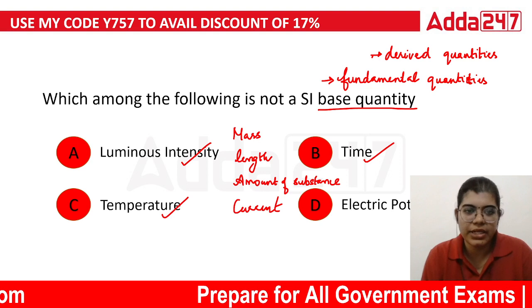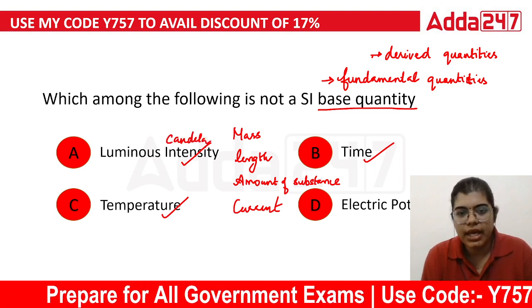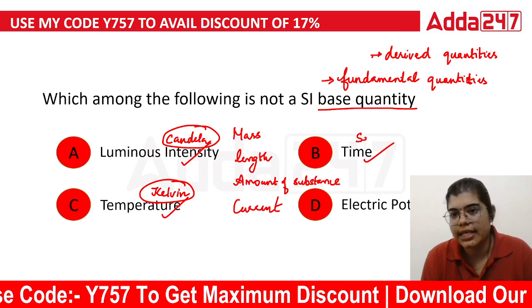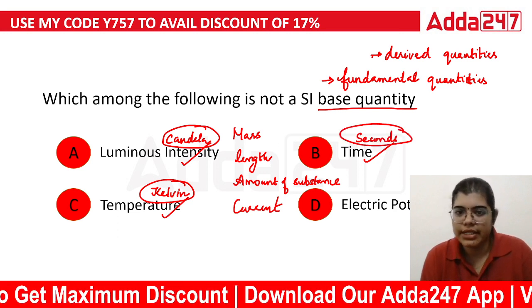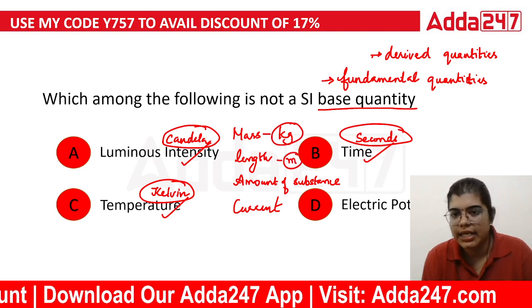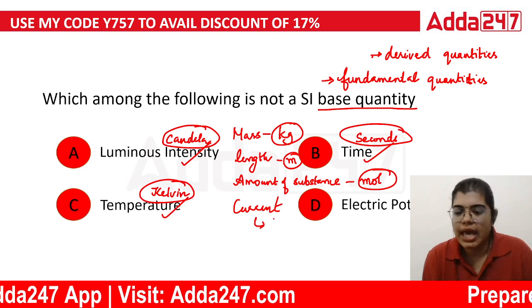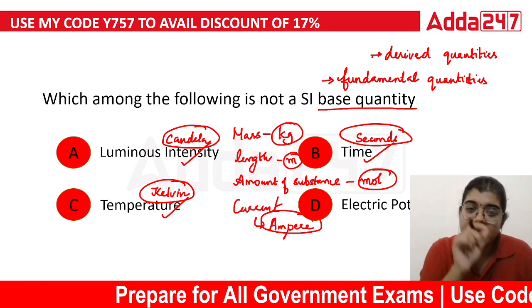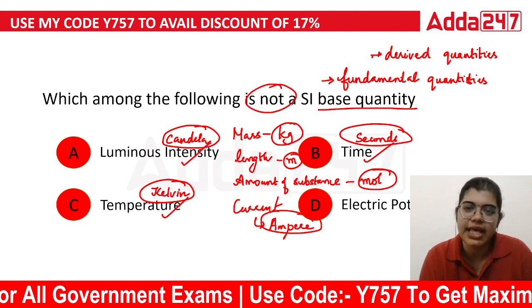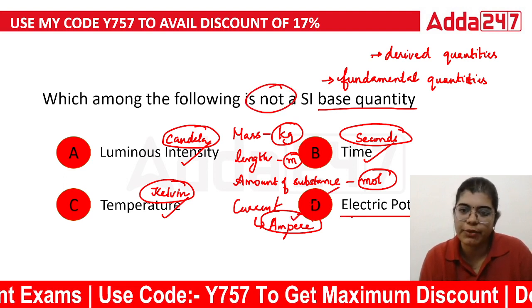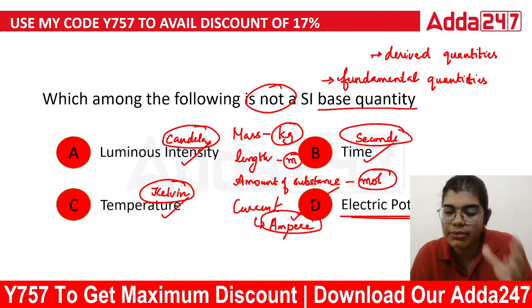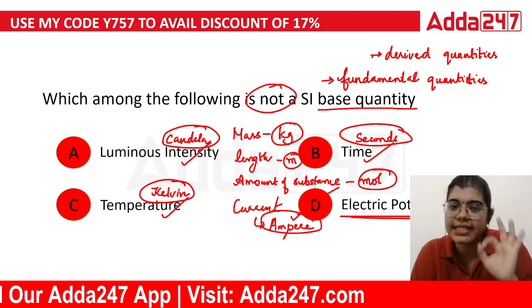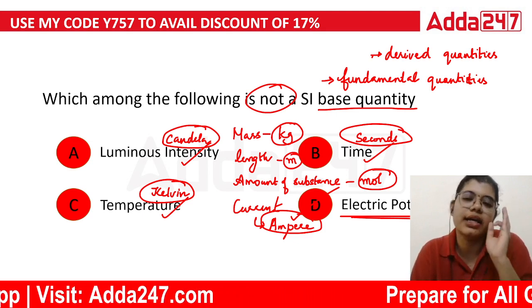Temperature unit is Kelvin — not degree Celsius, it is Kelvin. Time unit is seconds. Mass unit is kilogram. Length unit is meters. Amount of substance unit is mole. Electric current unit is ampere. These are the fundamental quantities. The answer — electric potential — is not a fundamental quantity; it is a derived quantity, so it is not an SI base quantity.